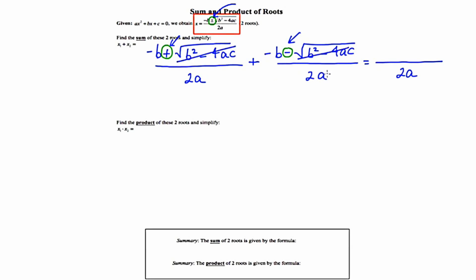Really, the only things that we're left with on the top are the negative b in the beginning and the negative b in the beginning of the second fraction.